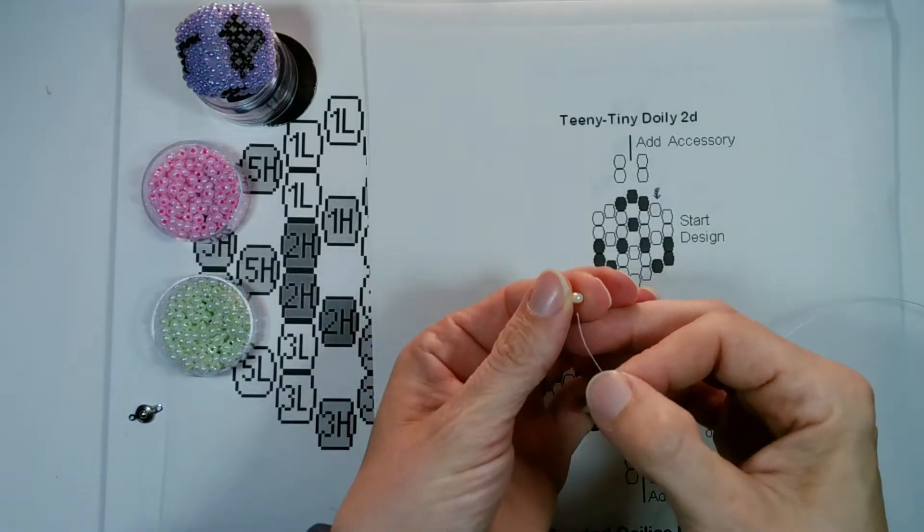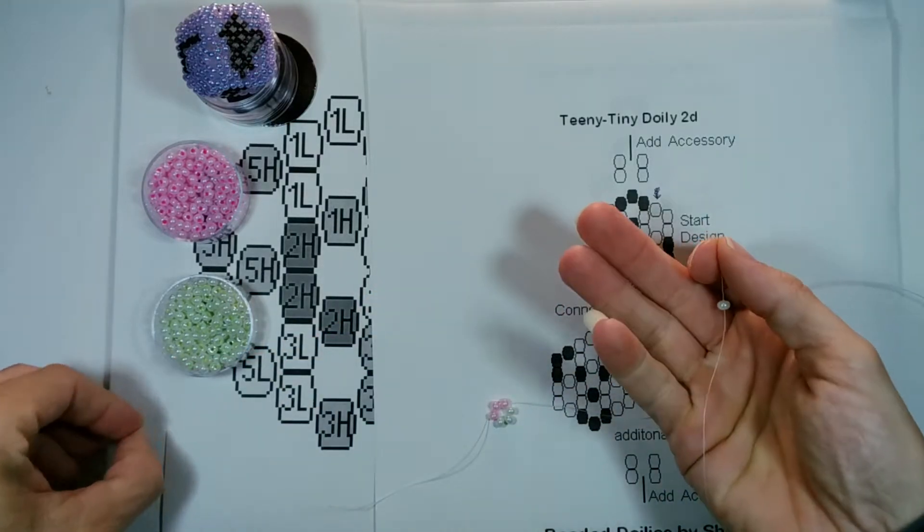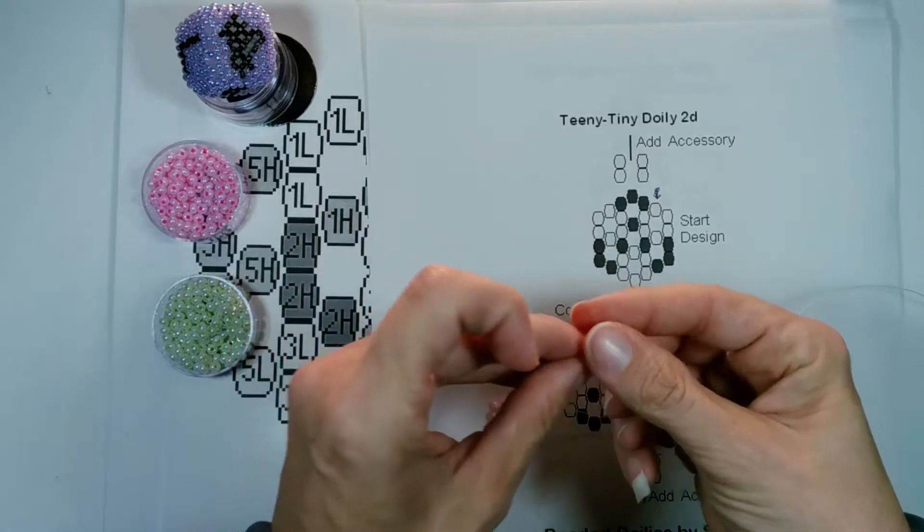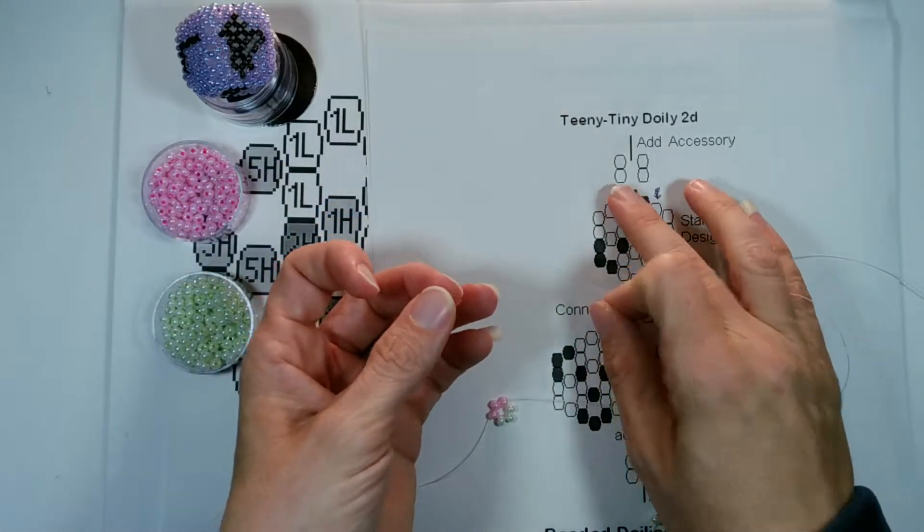So we add one, then we add our accessory, and then we add our other connection, so one on each side.